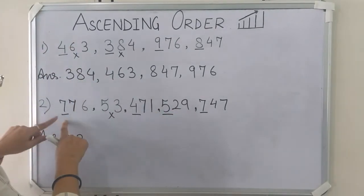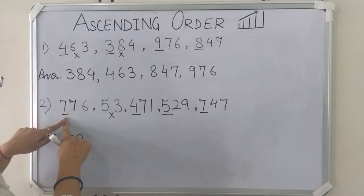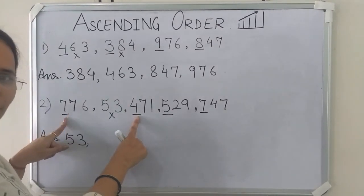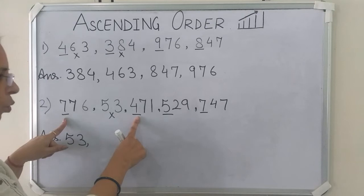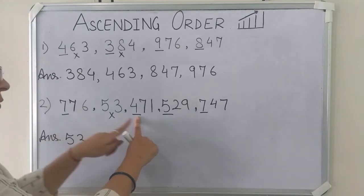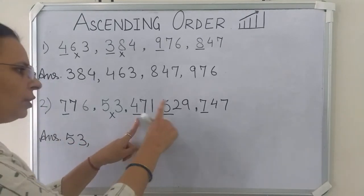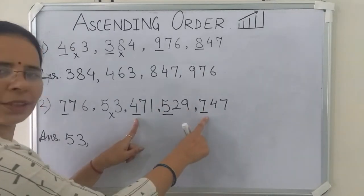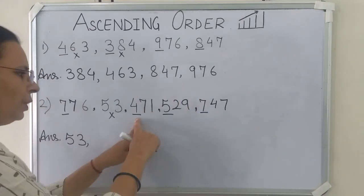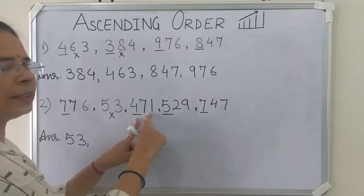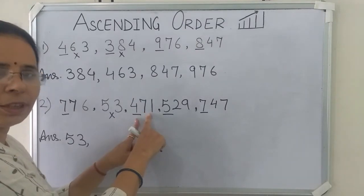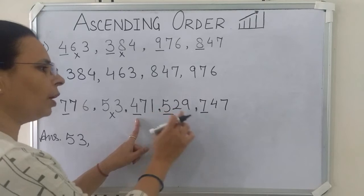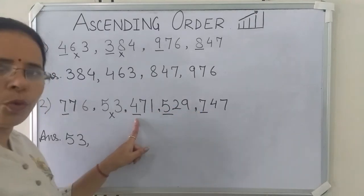Start comparing. The first hundreds digit is 7. Is 7 smaller than 4? No. So we will skip 7 and take 4. Is 4 smaller than 5? Yes. Is 4 smaller than 7? Yes. It means 471 is the smallest number among these 4 numbers.